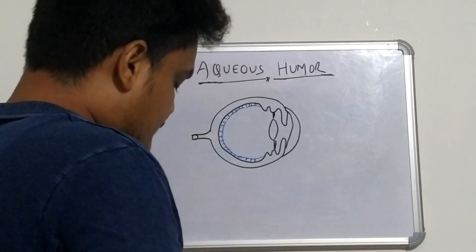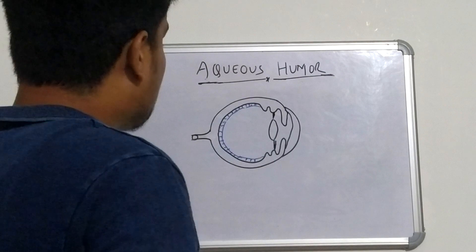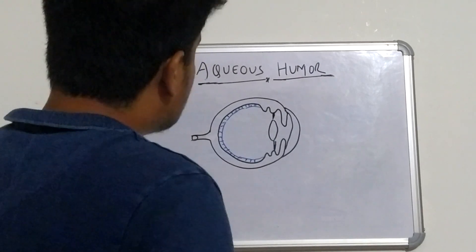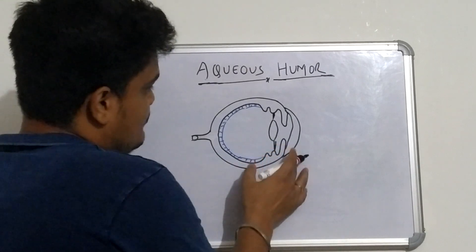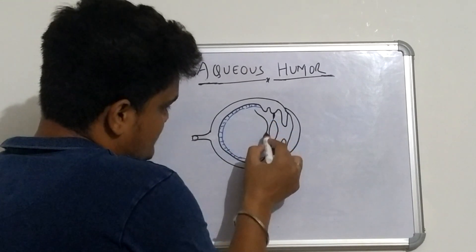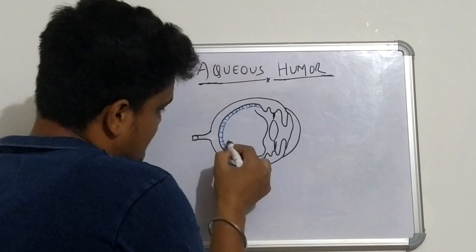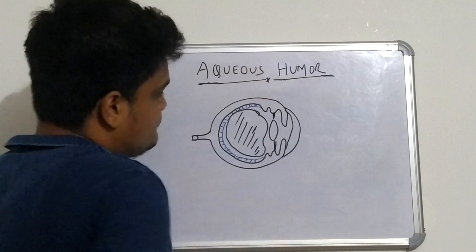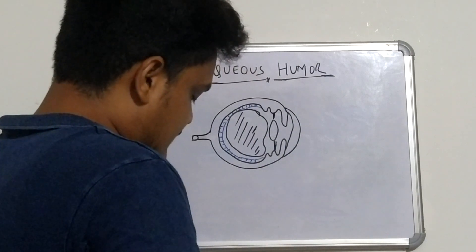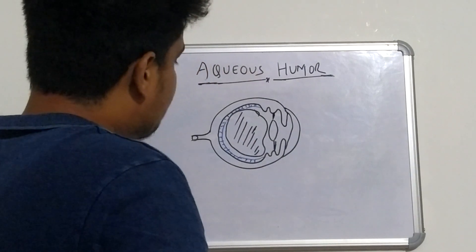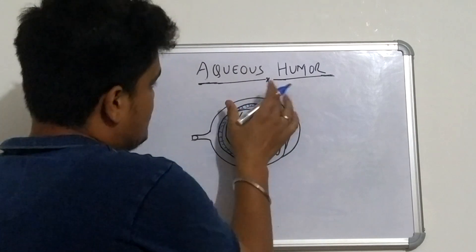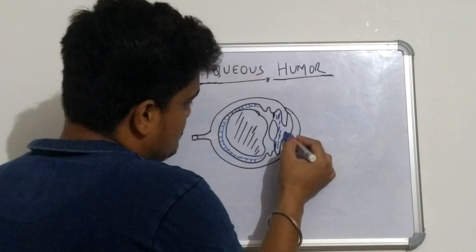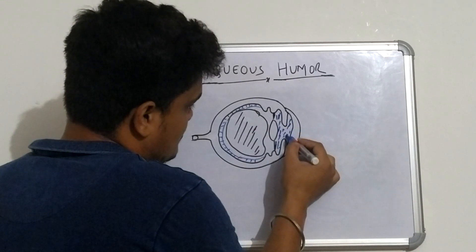We are going to discuss the fluid system of the eyeball. We have two fluid mechanisms: the first, present in the posterior area, is called the vitreous humor, and another very important fluid we will discuss today is the aqueous humor, which is present in between.